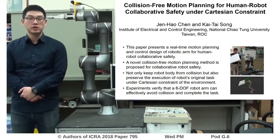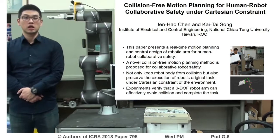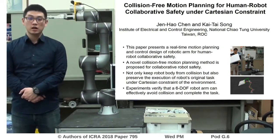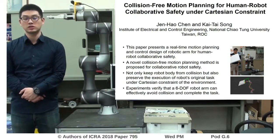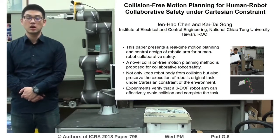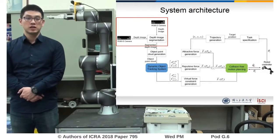We present a real-time motion planning algorithm for human-robot collaborative safety. It can not only keep the robot body from collision, but also preserve the execution of the robot's original tasks under the conditions and constraints of the environment.